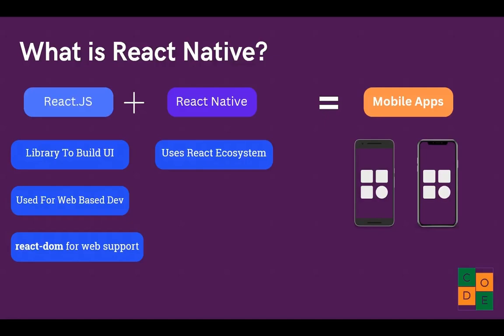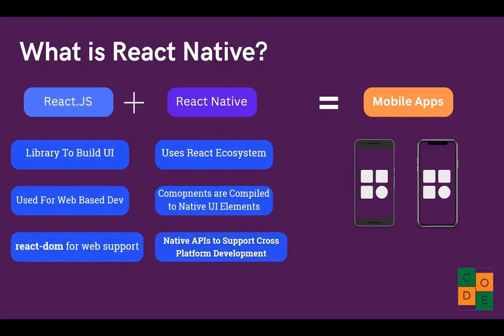React Native also provides access to platform APIs such as the camera and location, which are exposed to JavaScript. Even touch calls are also exposed to Android and iOS devices. So that's the big advantage of React Native. Therefore, React Native is similar to ReactDOM — it just does not target the web; it targets Android and iOS mobile platforms. It gives you APIs so you can interact with UI elements on Android or iOS to build your application.